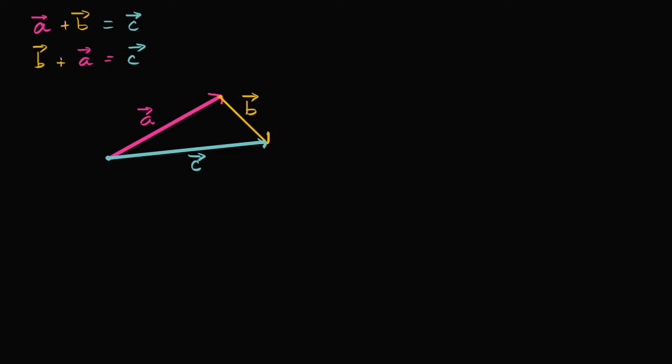So if I start with vector B, let's say I start over here. Let's say that was the origin. So I could start with vector B. Draw vector B just like that. And then add vector A to it. So start vector A at the terminal point of vector B, and then just draw vector A. So vector A.